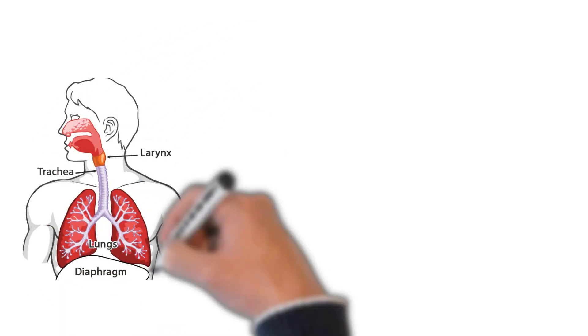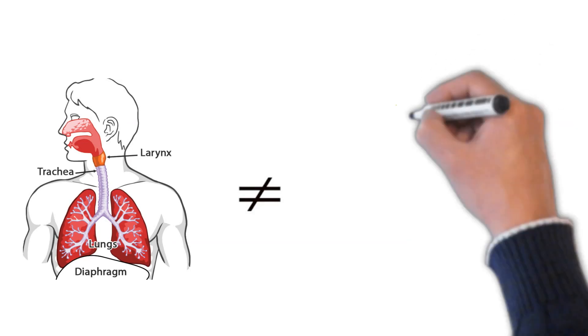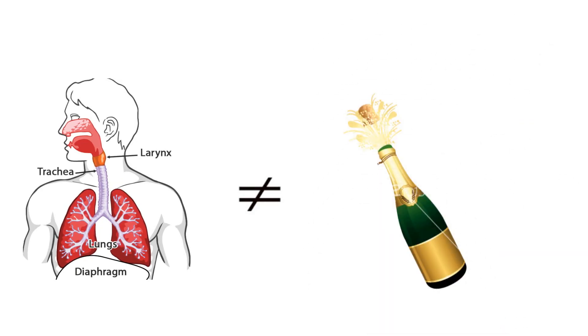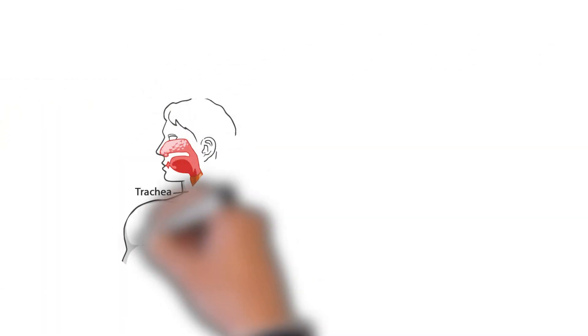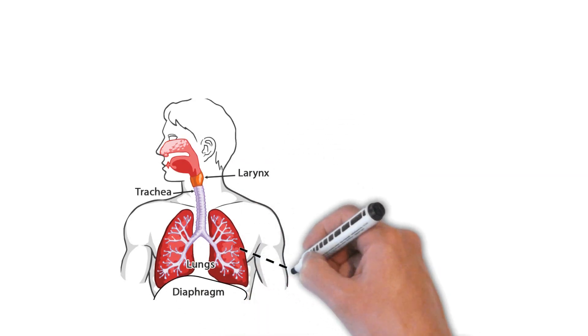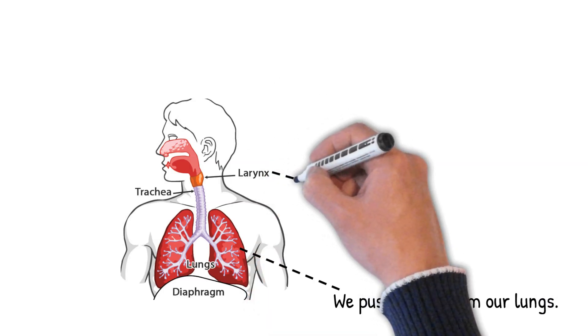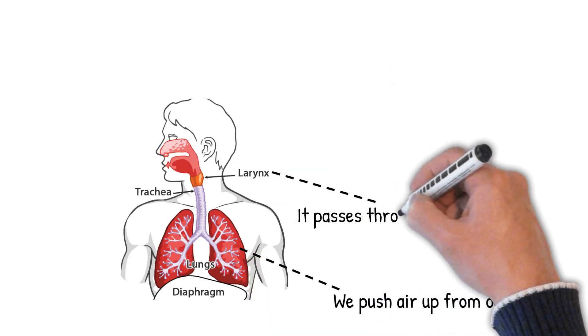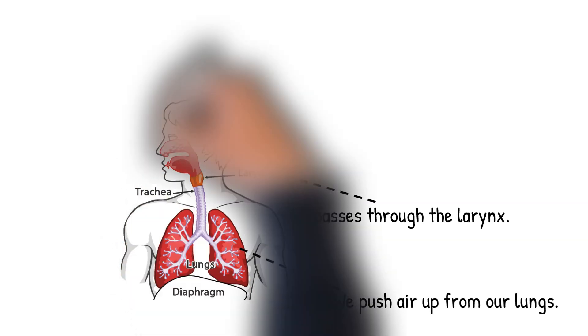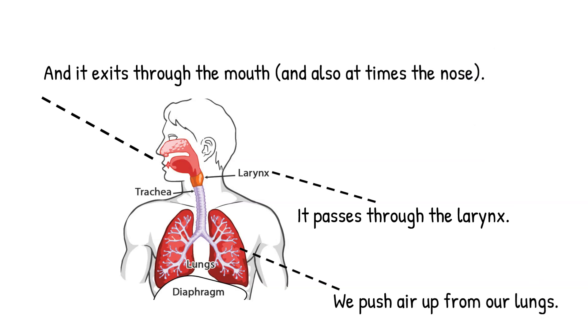And even though humans aren't bottles of champagne, it is worth noting something important about the way we produce speech. When we produce speech, we push air up from our lungs. That airflow passes through the larynx where the vocal cords are, and finally it exits through the mouth and sometimes through the nose.